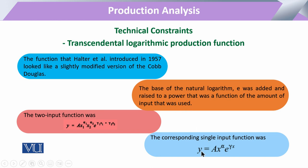That power is a function of the amount of input used. In a single input case, output Y is a function of technology A and input X, where X has the power alpha representing the contribution of input X toward total output Y. We can also write this as Q equals A times L to the power alpha, and the addition is the E base raised to the power gamma multiplied by the value of the input — X or equivalently L.